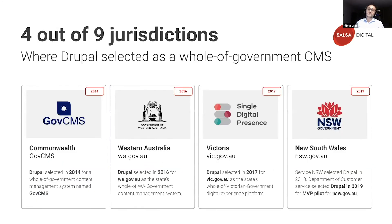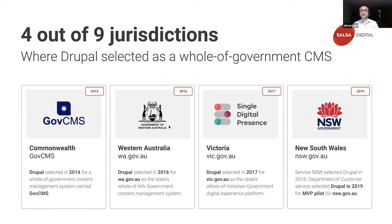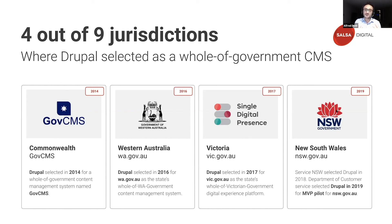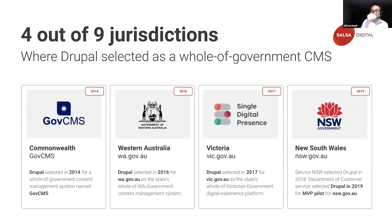Four of the nine jurisdictions within the Australian government have selected Drupal for their whole-of-government platform solution. In 2014, the Commonwealth government adopted Drupal; in 2016, Western Australia; in 2017, the state of Victoria; and just recently in 2019, New South Wales. Each has similar characteristics and realises similar benefits and outcomes, but each is a little different and at a different stage of their digital transformation and consolidation journey. The next part of this presentation covers highlights of each of them.